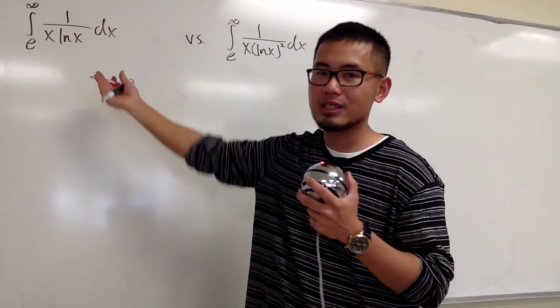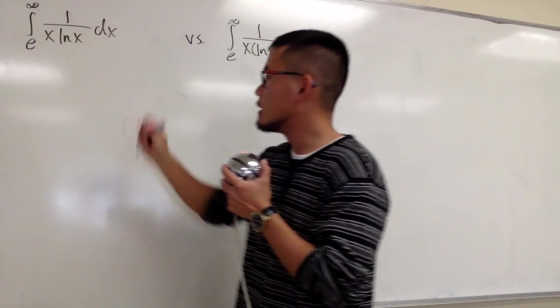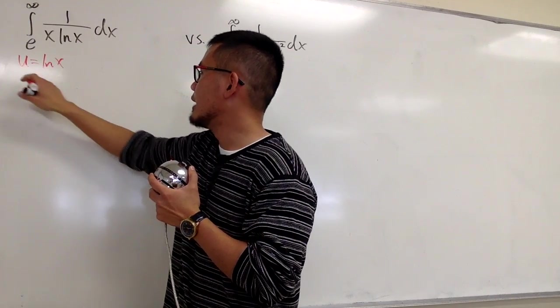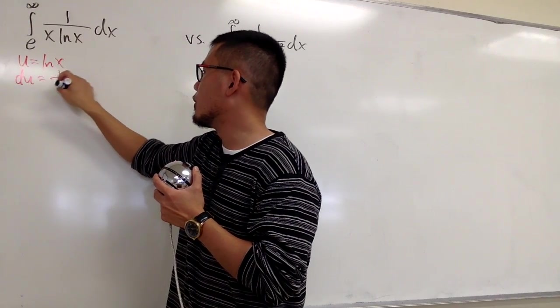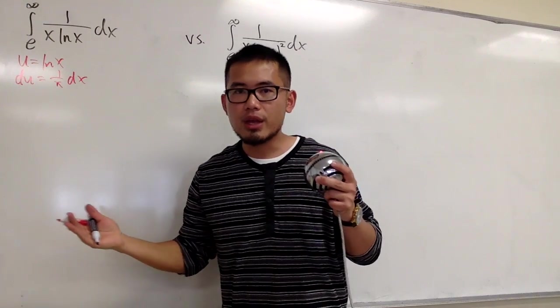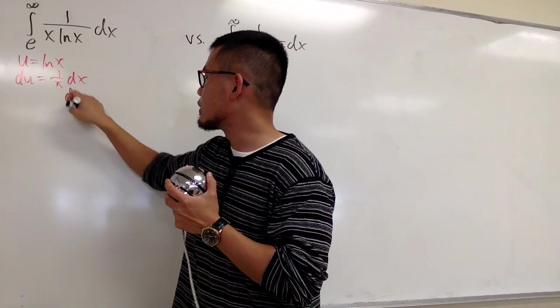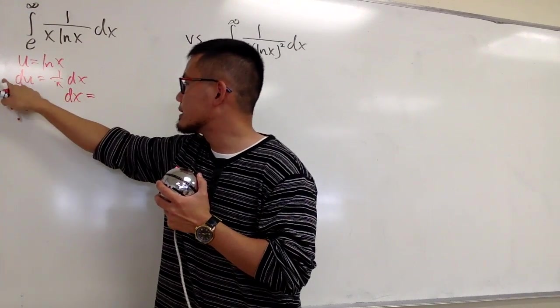So I'm just going to do this with u-substitution. Let u equal ln(x), and du is equal to 1 over x dx. And I'd like to just show you the cancellation. So let me multiply x on both sides. In other words, dx will be x times du.